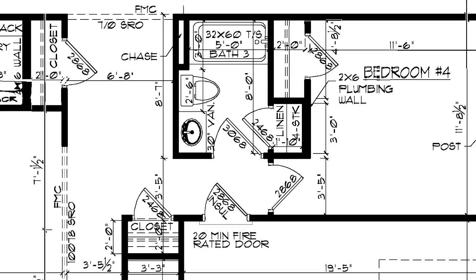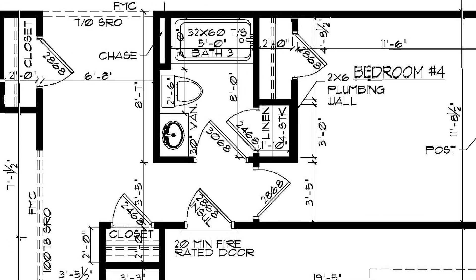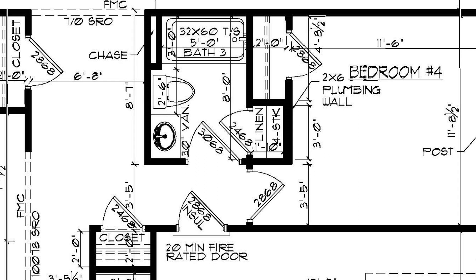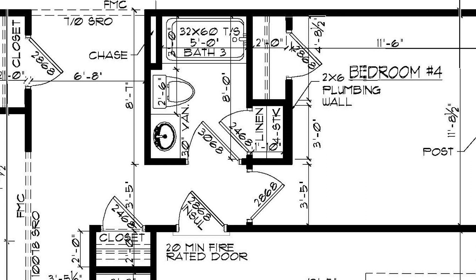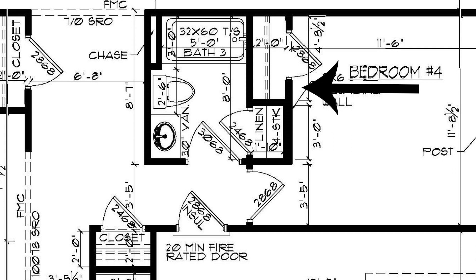Now I want to show you something else up here. They gave us a two-by-six plumbing wall. That's for our plumbing to go upstairs — for our drop for our drain line. If you look at it, it is noticeably thicker than the wall right next to it, which is a two-by-four wall. Most of the time these are going to be labeled. In residential construction drawings you're going to have two-by-four walls and two-by-six walls.